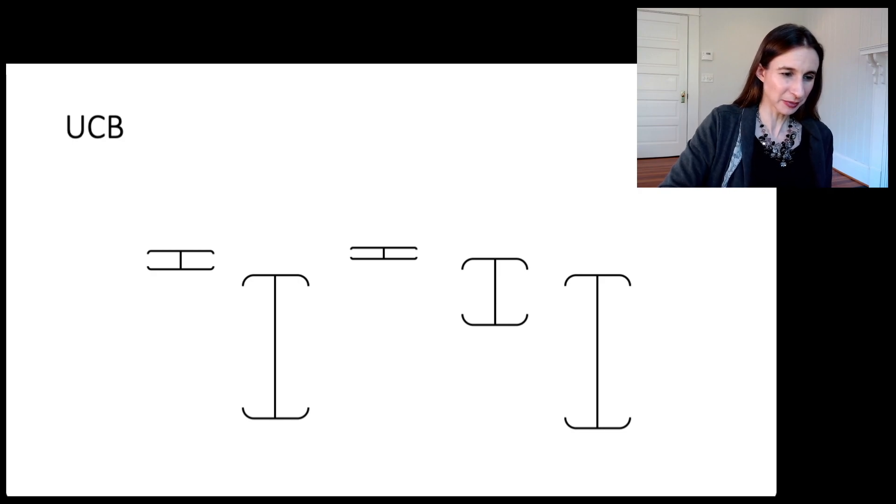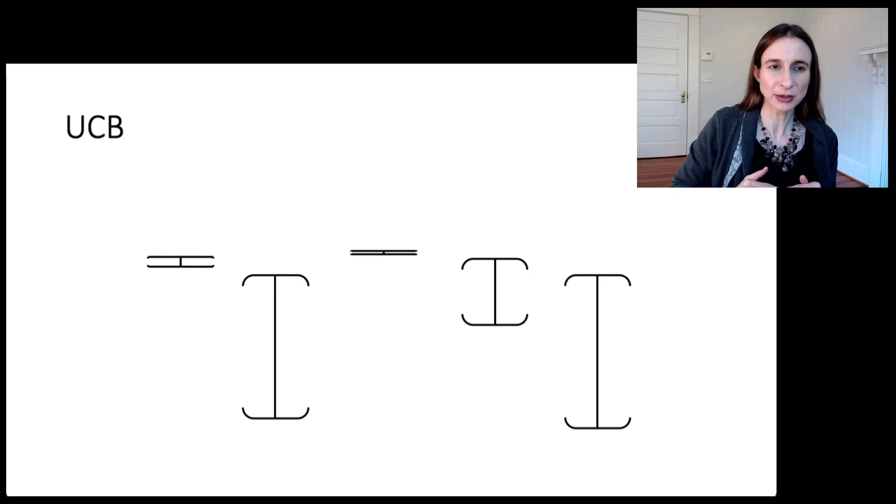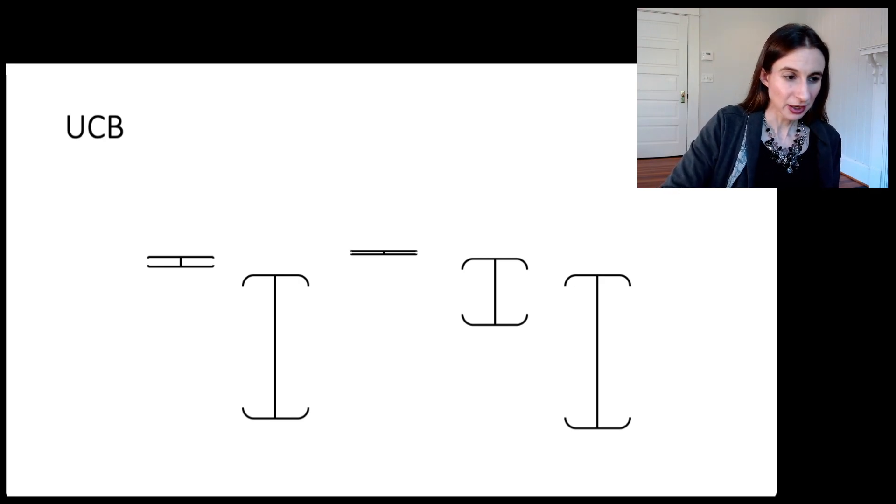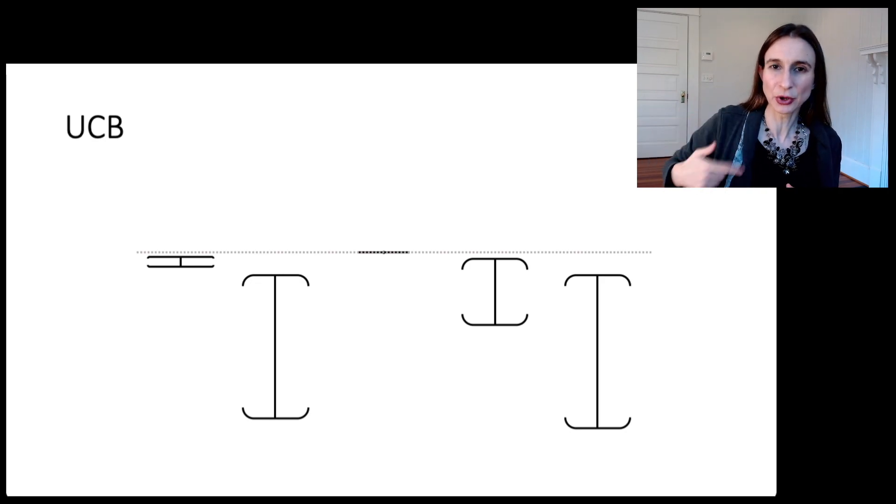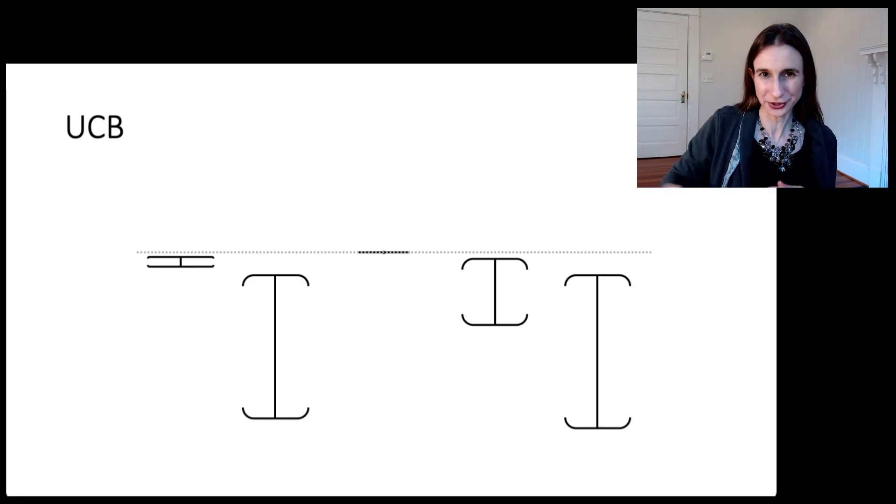It keeps going until we get a very good estimate of the arm's mean reward. We're looking for the arm's mean reward. We get a very good estimate of it. And when we figure out that, once we figure out that a particular arm's mean reward is higher than the other arm's mean rewards could be, the algorithm, just by following the upper confidence bound, ends up choosing that same arm over and over and over again for eternity.